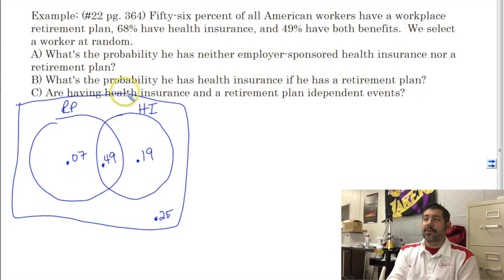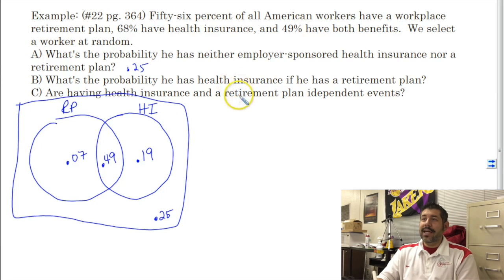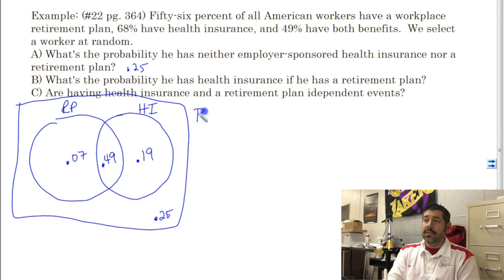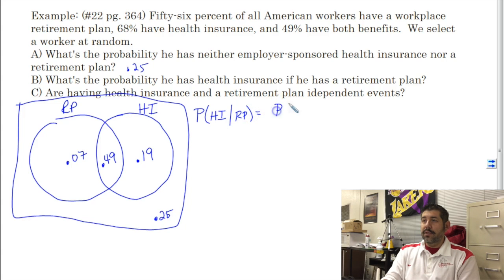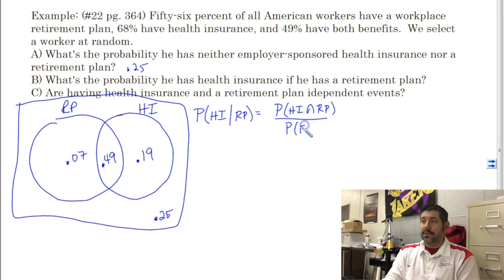What's the probability that he has neither health insurance nor retirement plan? That's 0.25. What's the probability that he has health insurance if he has a retirement plan? That's a conditional probability — P of health insurance given retirement plan — which equals the probability of having both divided by the probability of having a retirement plan.